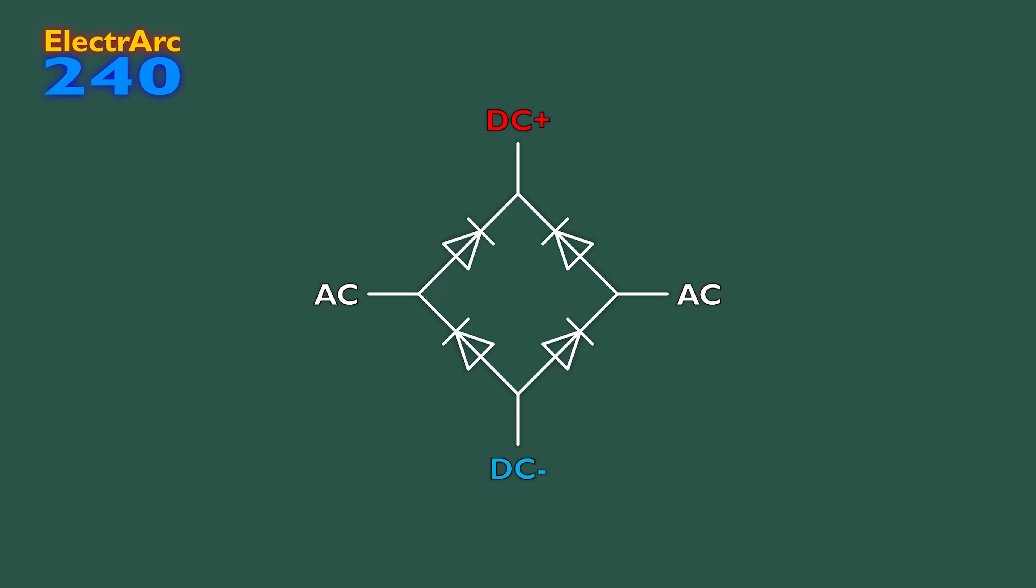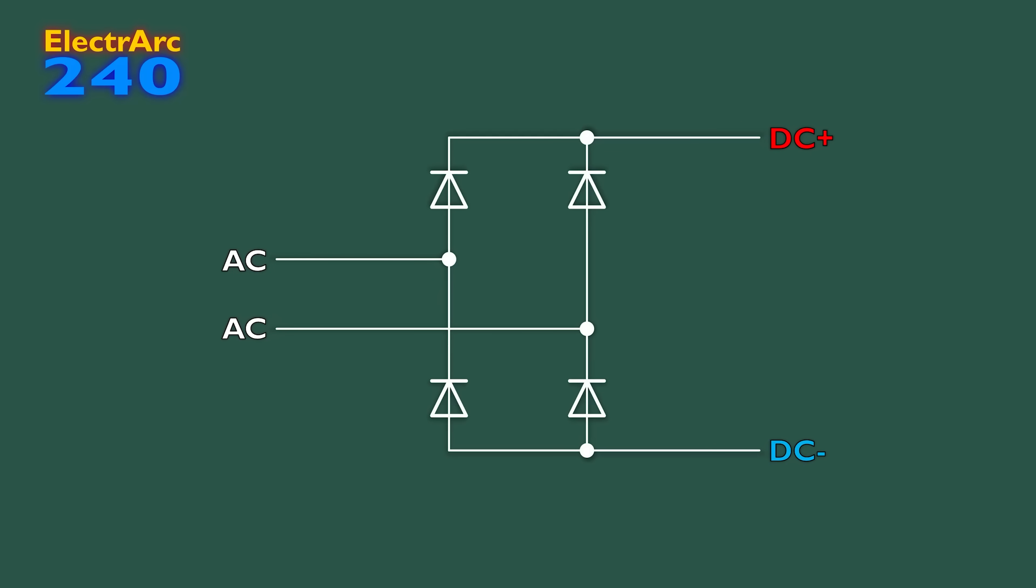Now, I find this representation a bit confusing and personally prefer to spread it out a little like this. We can clearly see that each connection of the AC input has a pair of diodes, with one facing towards positive DC and the other facing from negative DC.